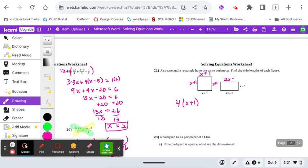So we've got 4 of the x plus 1s, and they're telling us that it's equal to this. So equal to 2 of the x minus 1s and 2 of the 2x minus 3s.